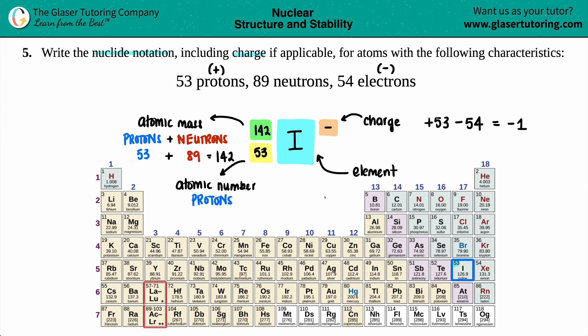So that's the charge in the upper right-hand corner. Now you can put just a negative because anything with just a negative means negative 1, or you could put the negative 1 there, which I'll do. You could also put 1 negative. It does not matter. Just make sure that you have the negative. And if you want to put the 1, that's cool too. And that is the answer for our nuclide notation. So we got all four parts and we are good to go.